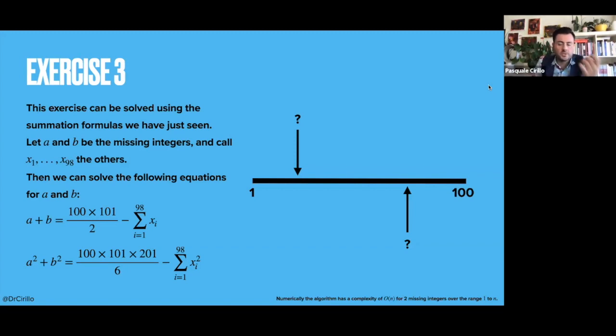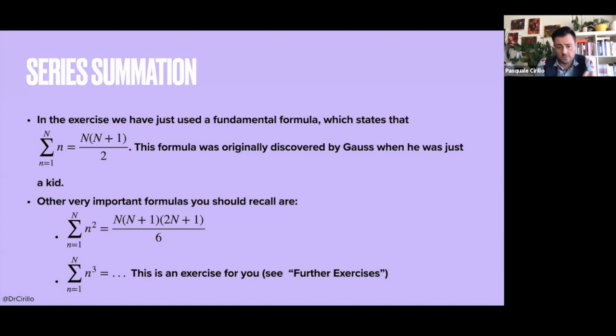If conversely, I ask you to tell me what is an algorithm to find three missing integers, in that case, you have to add an extra equation. And the extra equation can be, for example, the sum of the cubes. But you see that once you have these results, you can try to figure out the solutions.